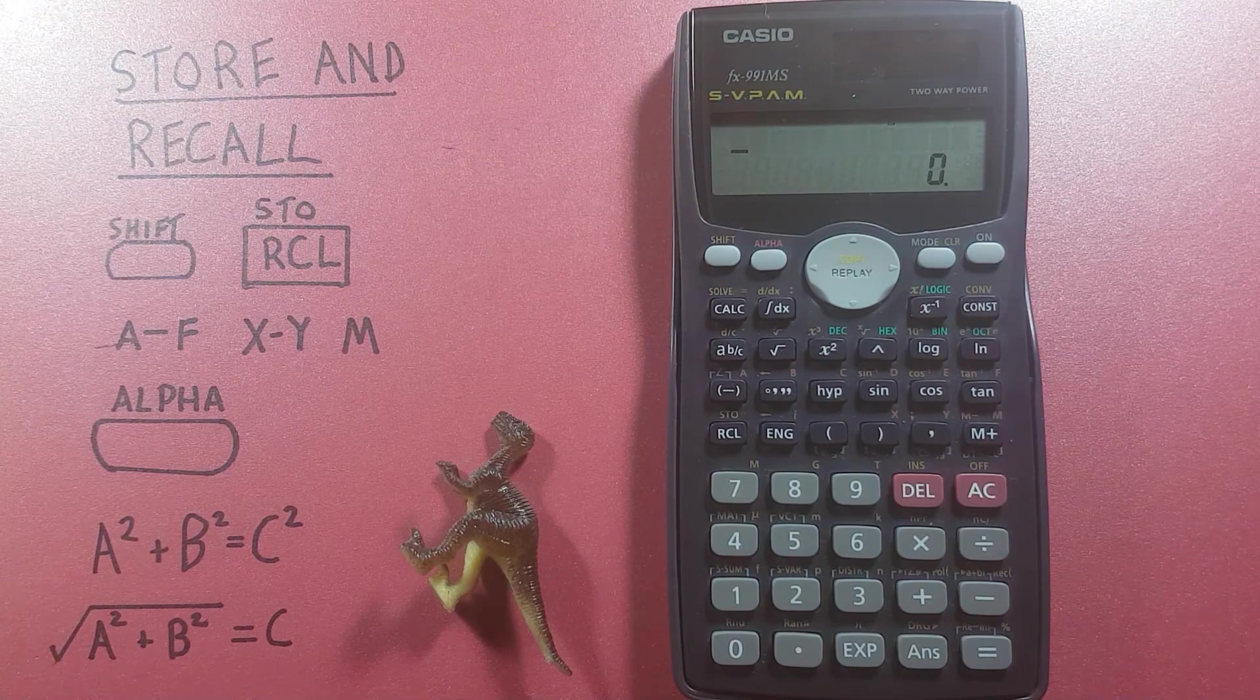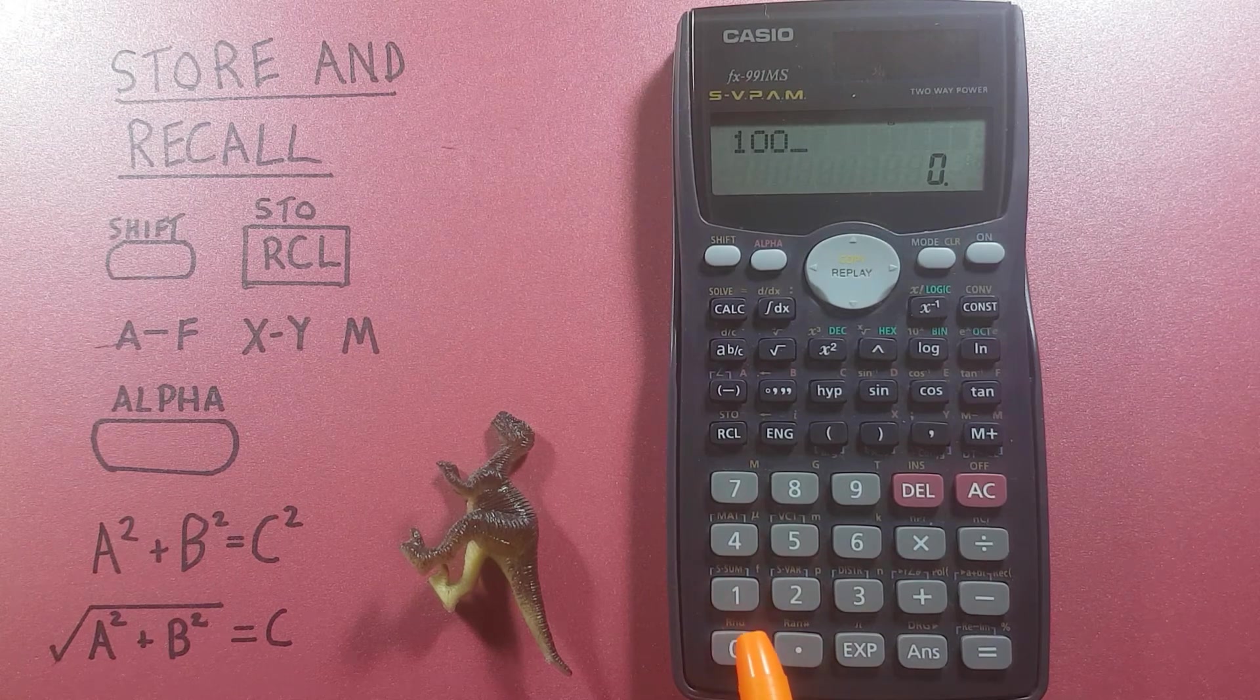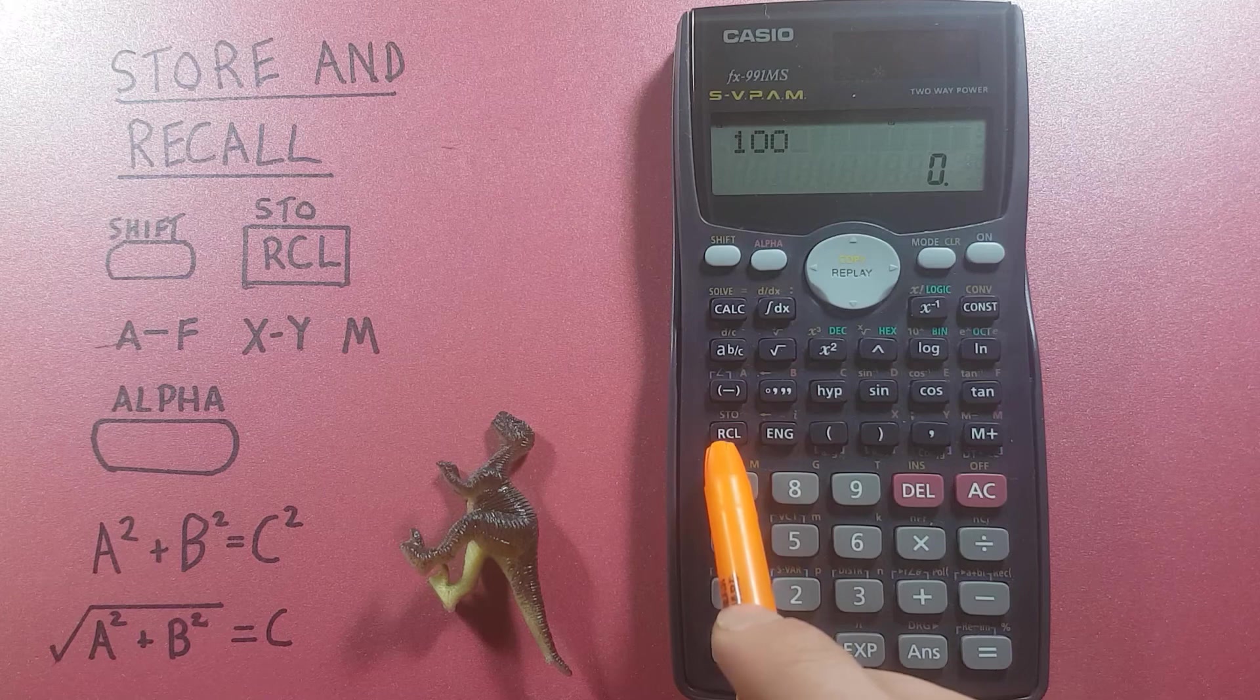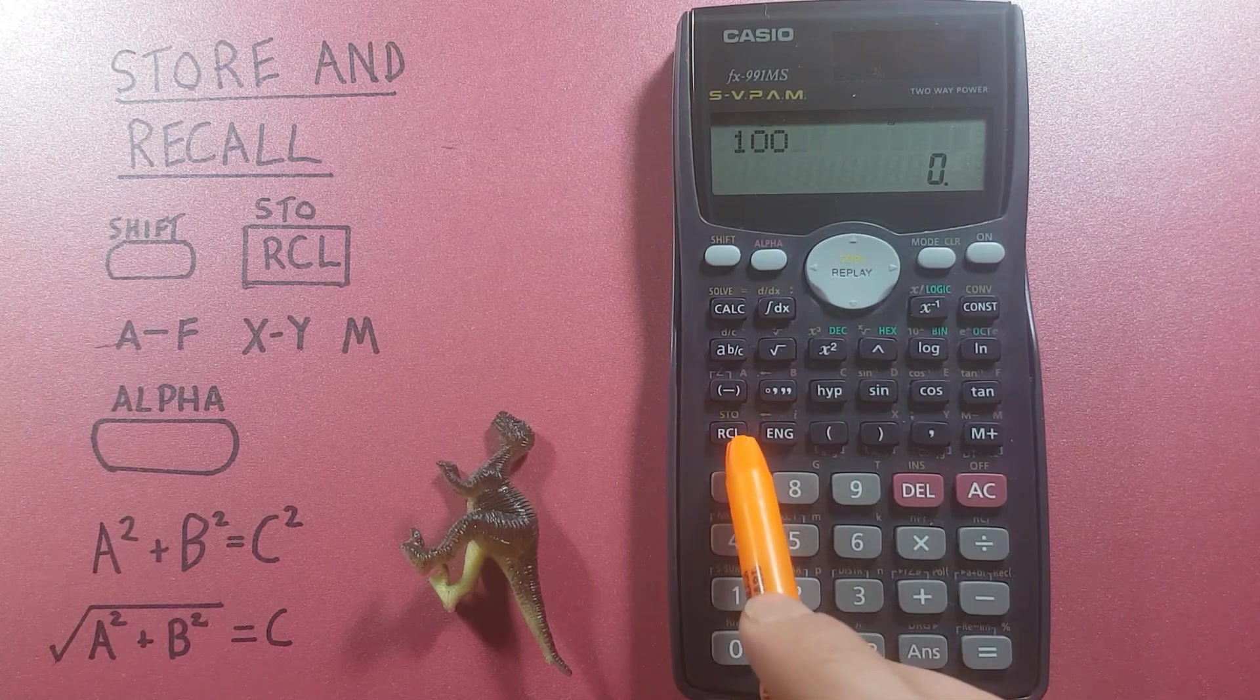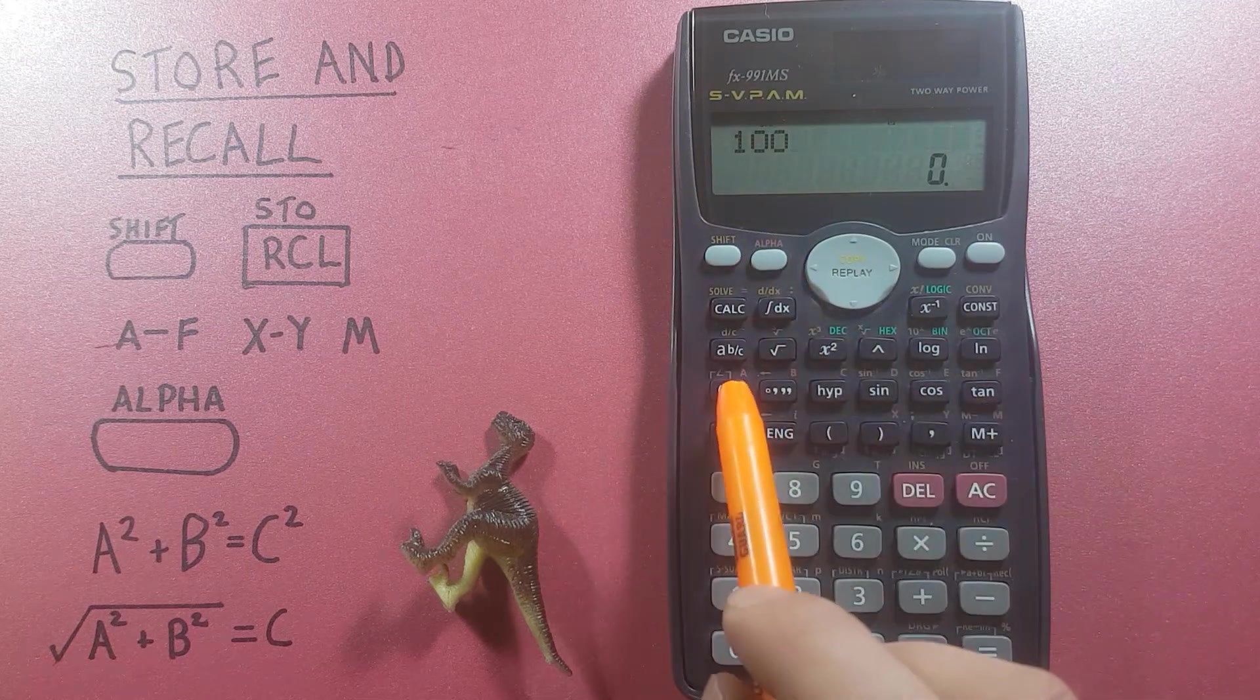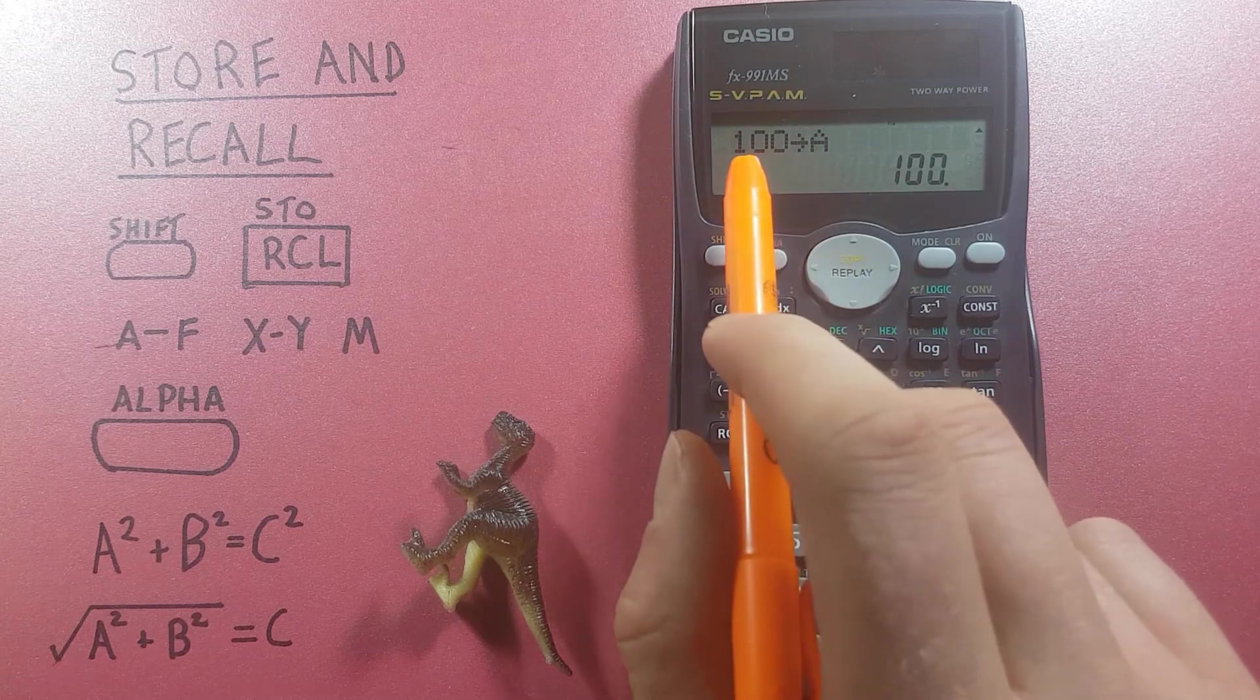All right, so to store a value you place it on the screen then press shift and then the RCL key with the shift value of store and then choose a slot, so we'll save this 100 to the A slot. You can see 100 into A.